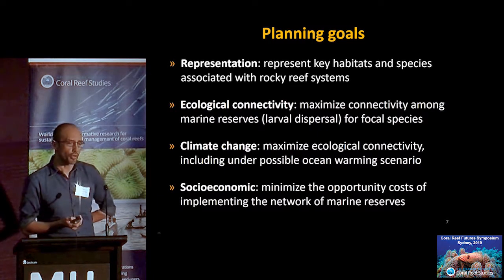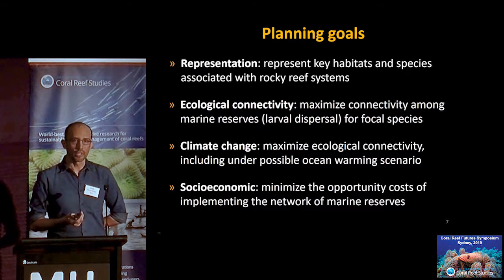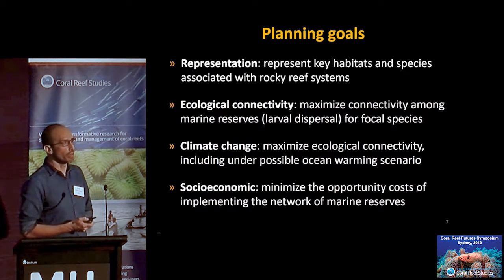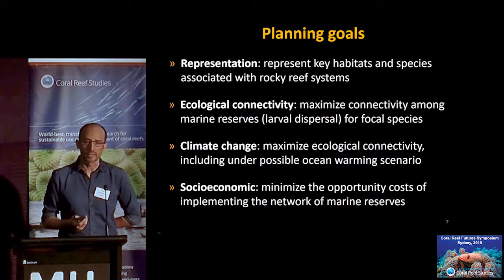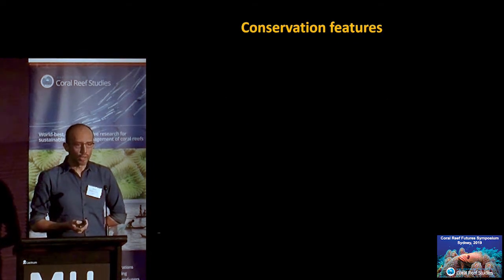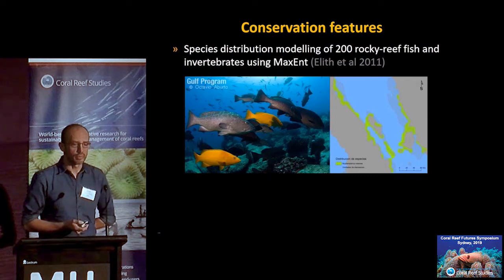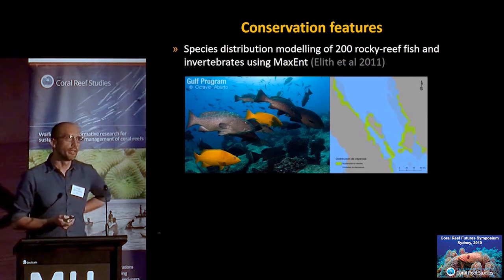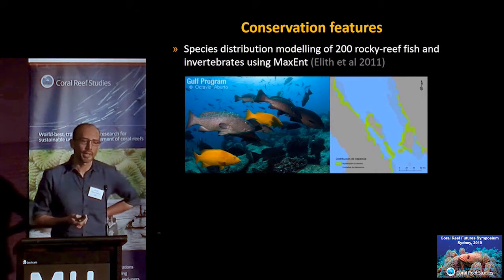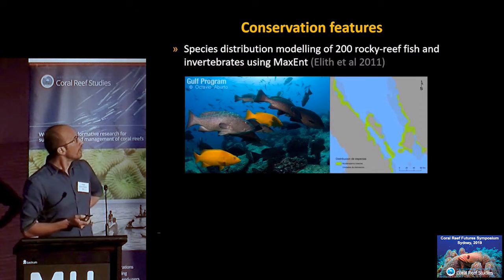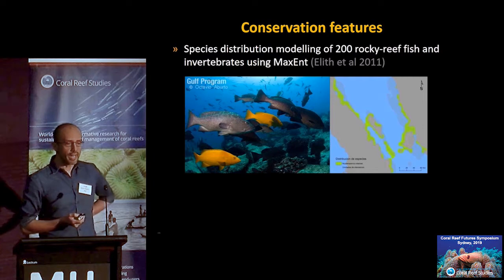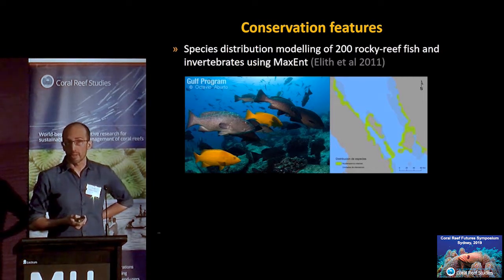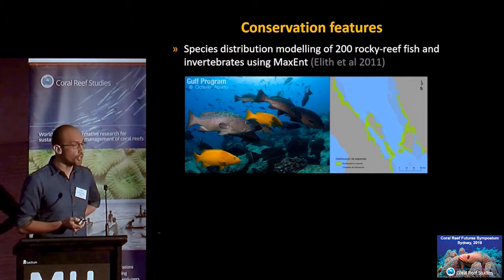It was also important to think about socioeconomics, so we looked at how to minimize opportunity costs of implementing a network designed with or without considerations for connectivity and climate change. We did species distribution modeling using traditional techniques for about 200 rocky fish and invertebrates, which required a lot of data cleaning and number crunching.